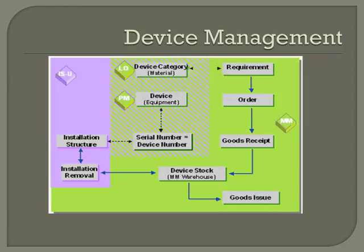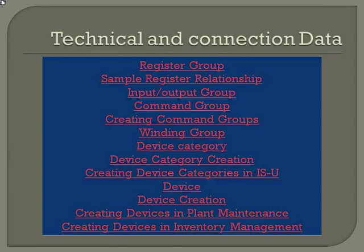Device category is basically a material because we need to purchase the device with logistic functions like storage. We first create a material master, designate it as a device category, and then use the device category to create the actual device. One of the most important parts of the device is measurement — for this we have the register. We configure and maintain register data, and a device may have more than two registers. In that case, we define what kind of register relationship exists, for example on-peak registers and off-peak registers. We also have non-counting registers like input-output group, command group, and winding group — basically the transformer group. So technical data and connection data is about configuring and maintaining the device and associated components like registers.